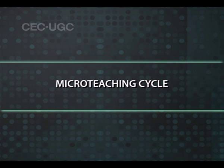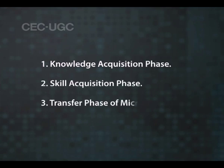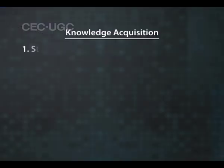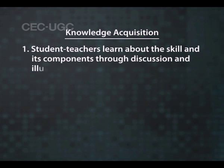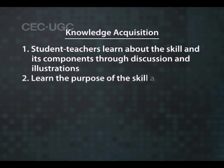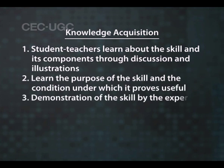Micro-teaching cycle. There are three broad phases for practicing micro-teaching: the knowledge acquisition phase, the skill acquisition phase, and the transfer phase. The major elements of the knowledge acquisition phase are: student teachers learn about the skill and its components through discussion and illustrations; they learn the purpose of the skill and the condition under which it proves useful; demonstration of the skill by the expert; and examining the component behaviors involved in the skill to clarify its characteristics.